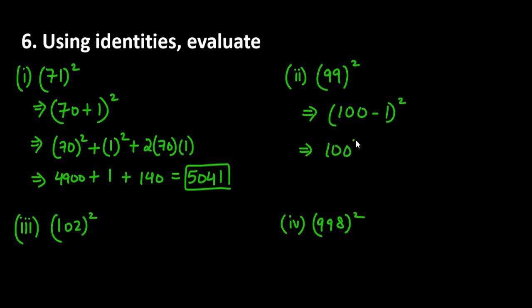First we have 100 square plus 1 square, then minus 2 into ab, 100 into 1. 100 square is 10000, 2 into 100 is 200. 10000 minus 200 and 1 to add so it will give you 9801.